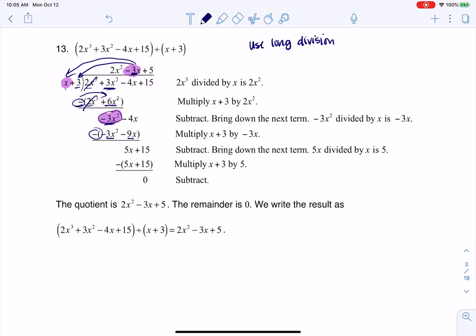I'm going to distribute that subtraction to both terms in that binomial. So negative 3x squared minus a negative 3x squared. Well, those cancel by design because subtracting a negative is positive. I've got negative 4x minus negative 9x, so that's going to be positive 5x.